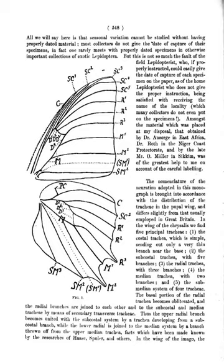Empodium: anatomical feature, either a bristle-like or pad-like structure between the tarsal claws of various insects, notably Diptera. Encapsulation: the immune response by plasmatocytes to the presence of a parasitoid egg or larva which results in the formation of a multilayered capsule that causes the parasitoid to suffocate or starve.